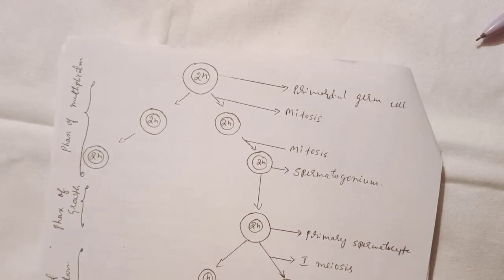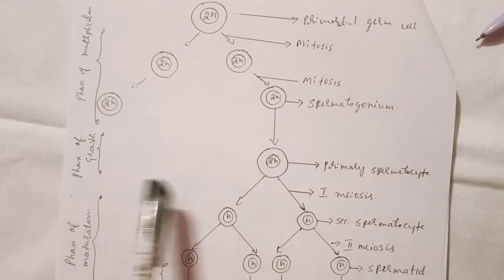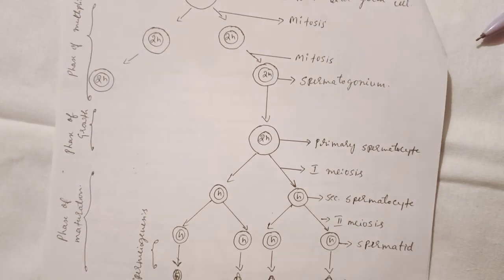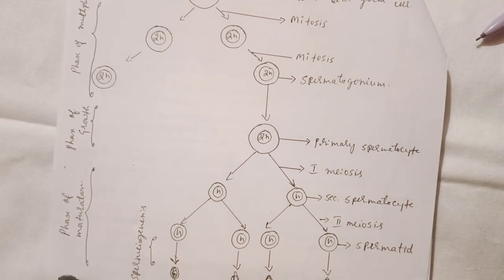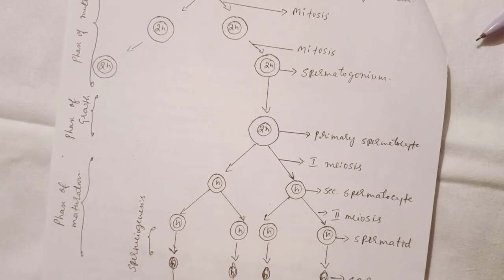Then the diploid to primary spermatocyte is called the phase of growth. Then the first meiosis to the sperm production, the phase is called the phase of maturation. Thank you.